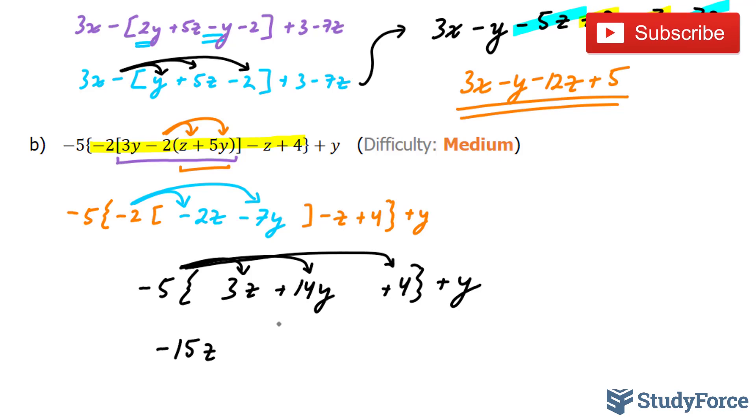Negative 15z. Negative 5 times 14 is negative 70y. Negative 5 times 4 is positive 20.